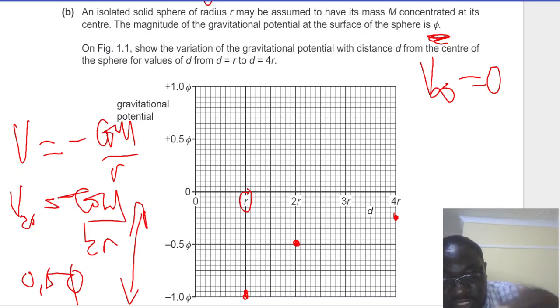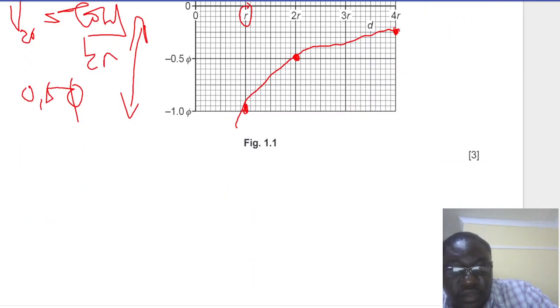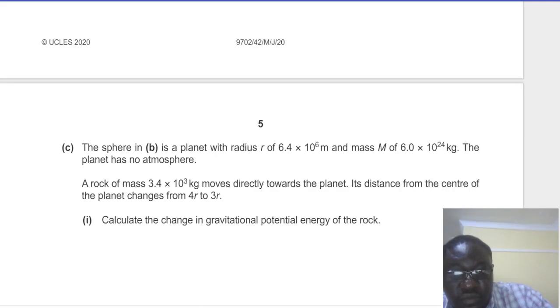So which means our graph has to be a smooth curve, like that. So our graph is going to be like that, starting from R.